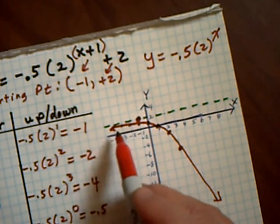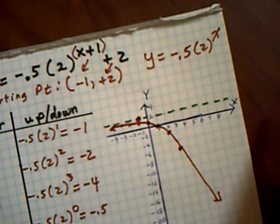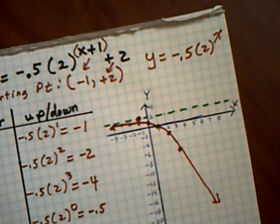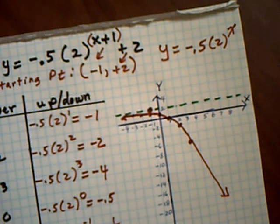So when I started dating, my mother said, have an asymptotic relationship — get close, but don't touch. So there we are. That's the last of the series. I hope you've enjoyed it. Thank you.